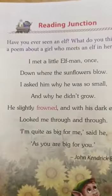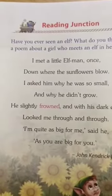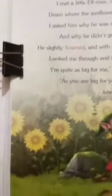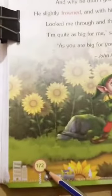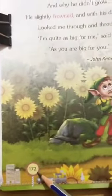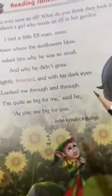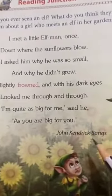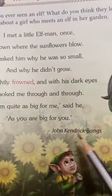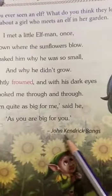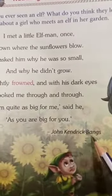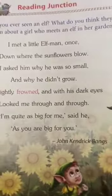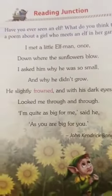Now let's start the chapter — that is Reading Junction, and it is on page number 172 of your book. We are going to read a poem, Children, and this poem is written by John Kendrick Banks. So let's start reading it.